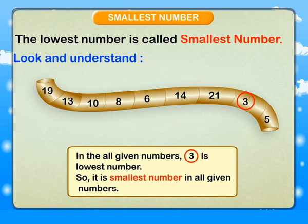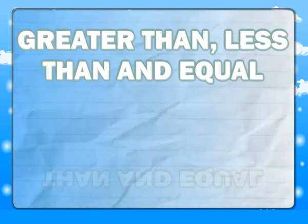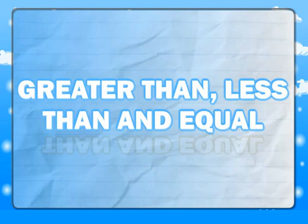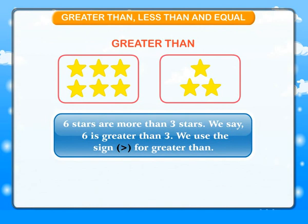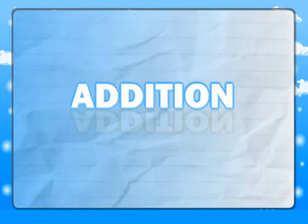Greater than, less than and equal. Greater than: 6 stars are more than 3 stars. We say 6 is greater than 3. We use this sign for greater than, so 6 is greater than 3.